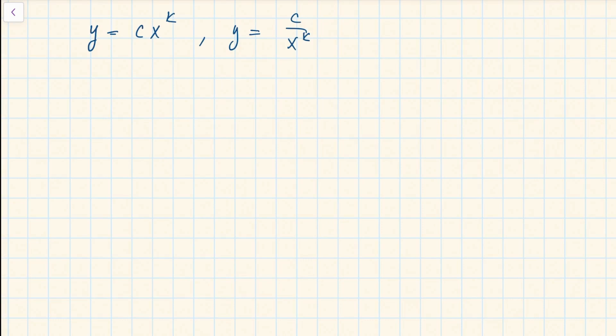If you take a logarithm of both sides, for example this first equation, you will get log of y is equal to log of c plus k times the log of x. And so now you get a linear relationship between log of y and log of x. And so if you find the line that fits your data best, then this slope of this line is exactly the power in the original relationship.